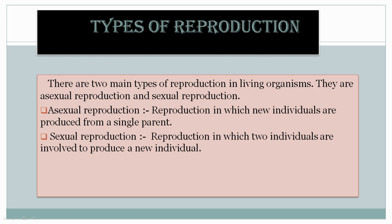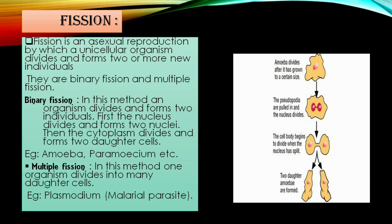The types of reproduction are asexual reproduction, in which only one parent is involved to produce new individuals, and sexual reproduction, where two parents are involved to produce new individuals. Let's focus on asexual reproduction.